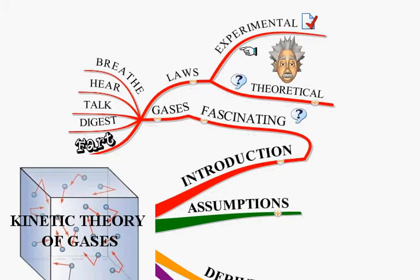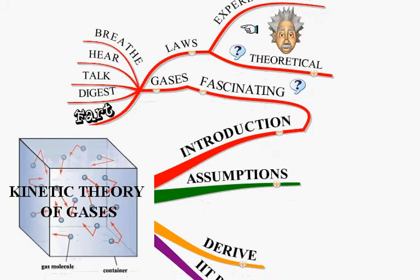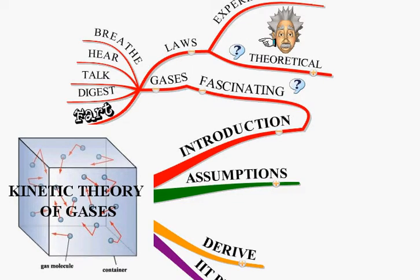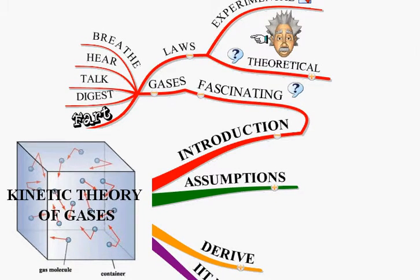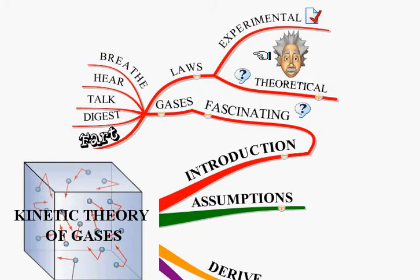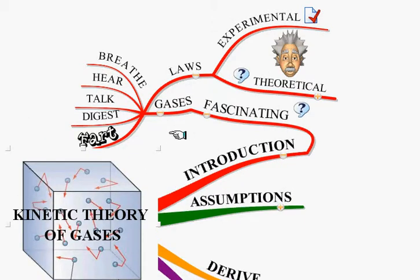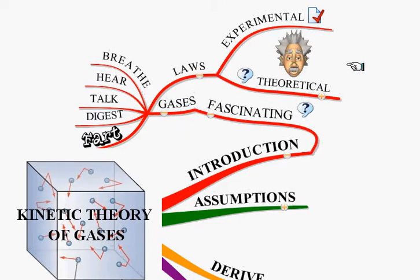Now our question is: is it possible to derive this ideal gas law theoretically? That is, just starting with some assumptions about how gases behave, can we arrive at this ideal gas law? When we ask such questions, it reminds me of Einstein, because he — just with the help of a pen and paper — derived very great truths about nature which changed the way the world looks at it. He produced the special theory of relativity and general theory of relativity, all sitting at his desk. When we do the derivation related to kinetic theory of gases, we get a chance to experience that same thrill Einstein would have experienced.